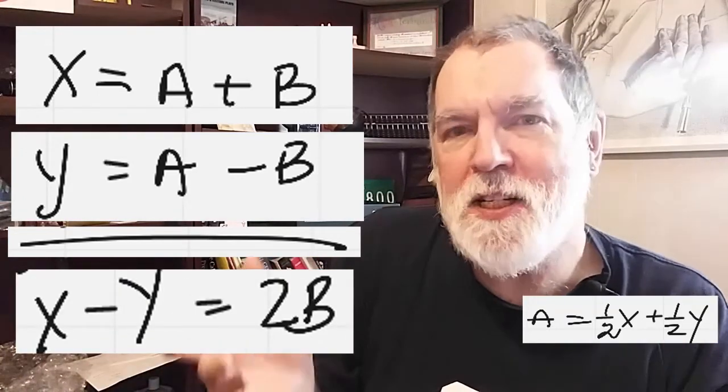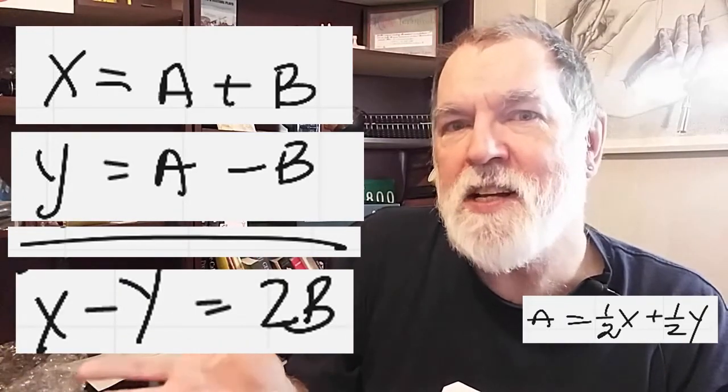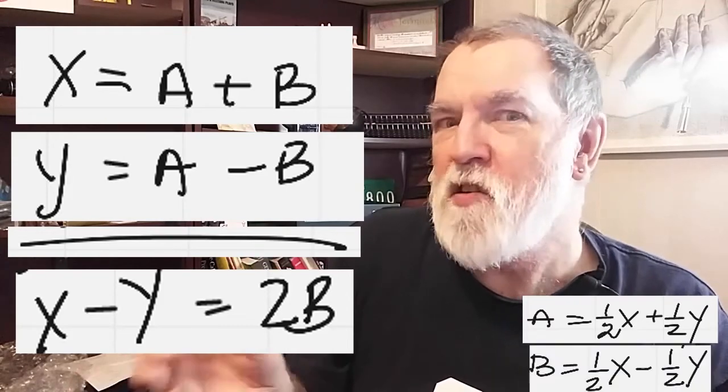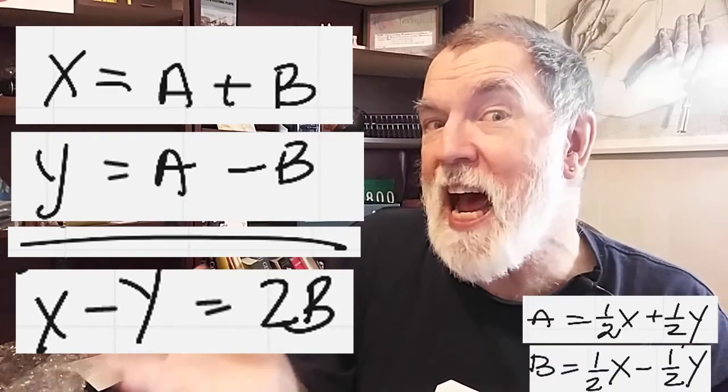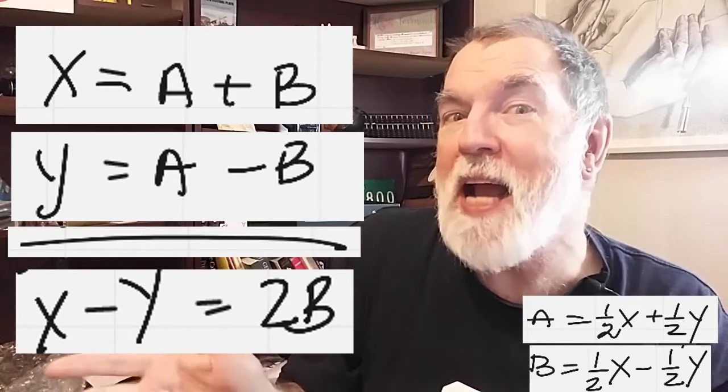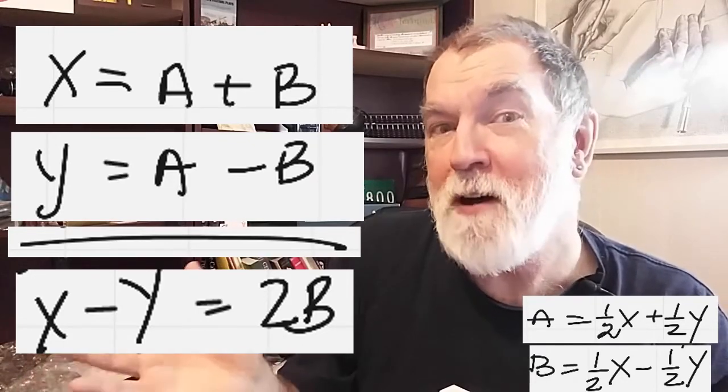X minus Y is 2B. So B equals 1 half of X minus 1 half of Y.